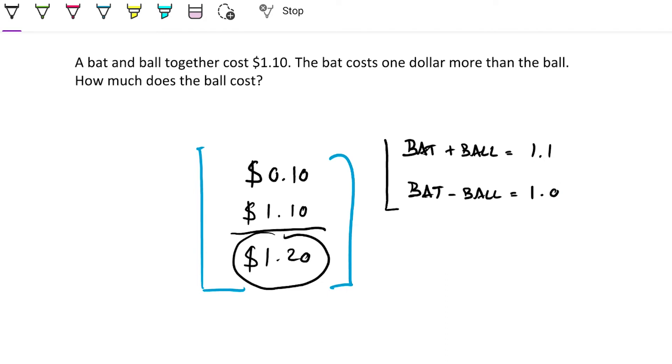Then because this is a system of two unknowns, we can say two times the cost of the bat would just be $2.10. So therefore the cost of the bat is just half of that, so that's $1.05. So $1.05 is how much the bat costs.